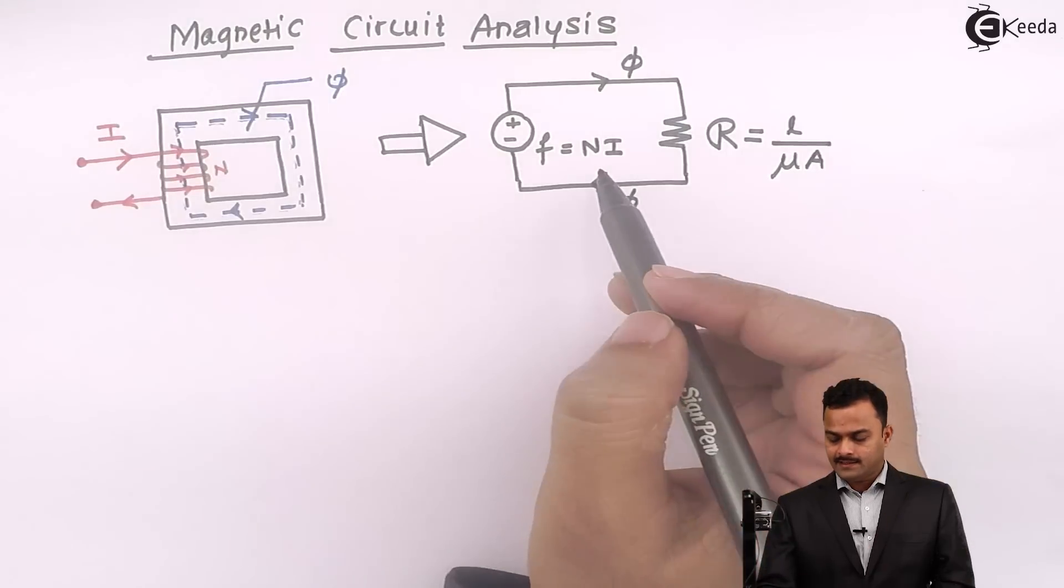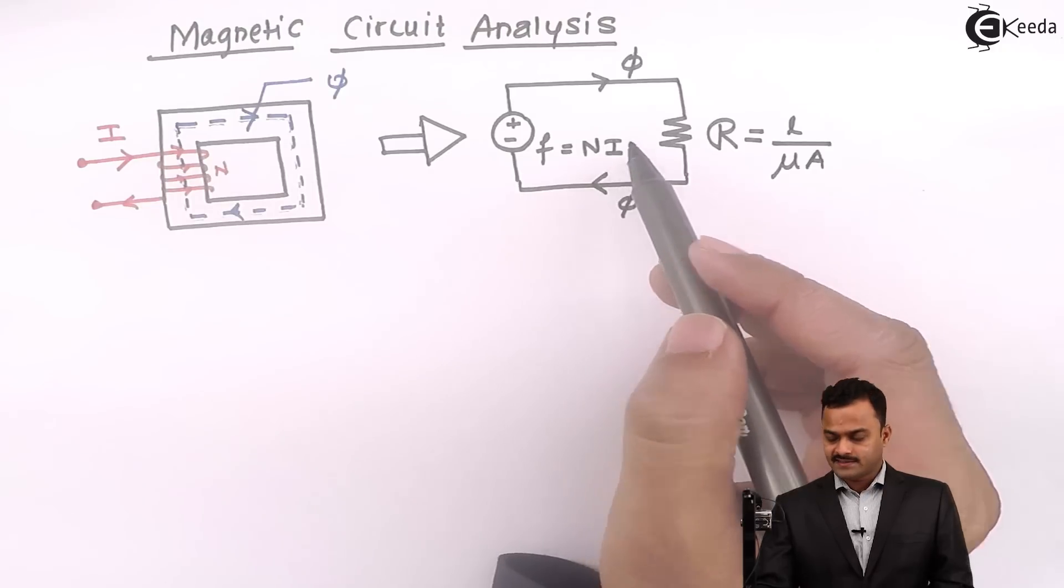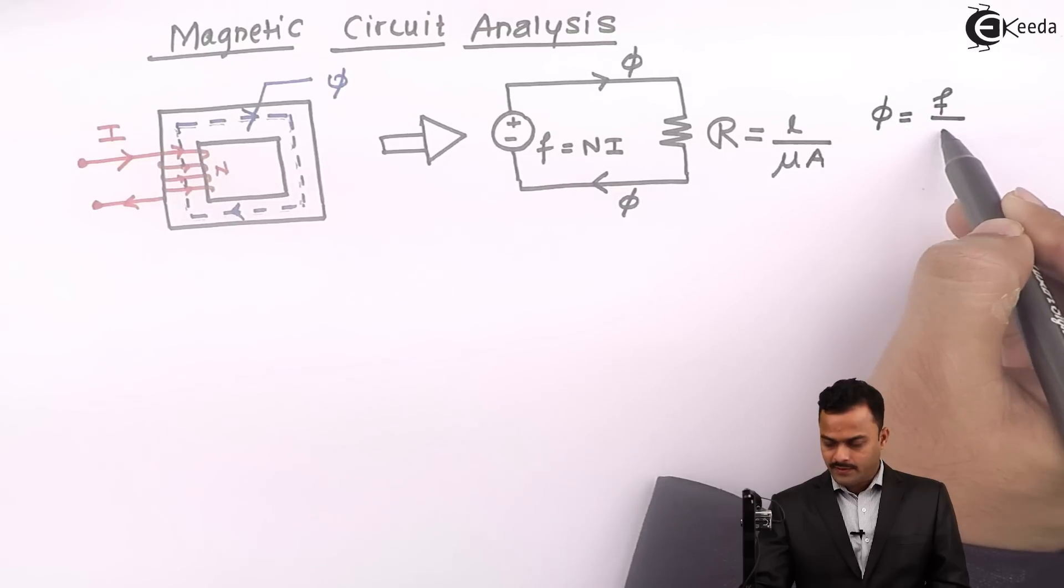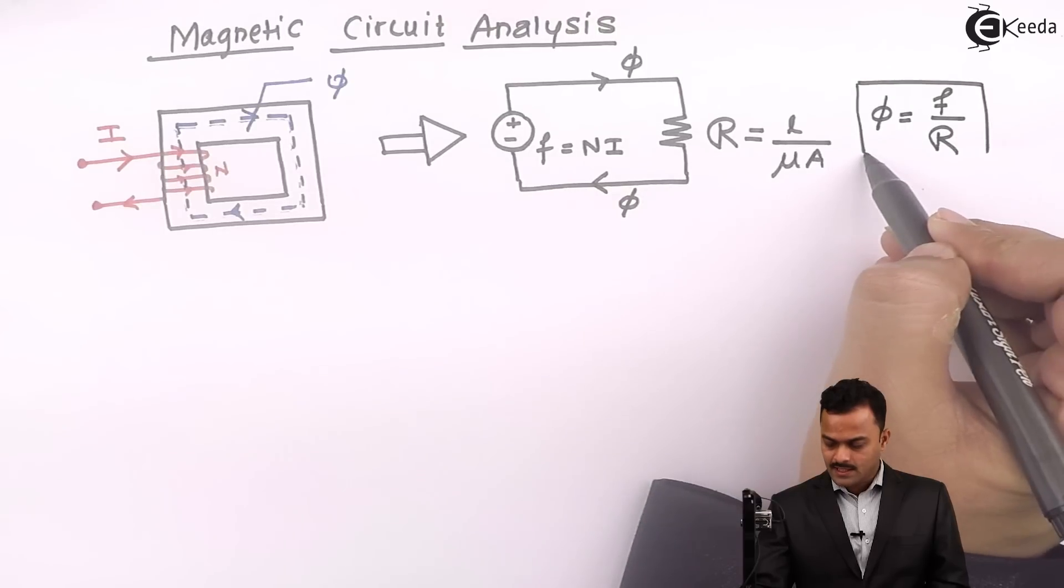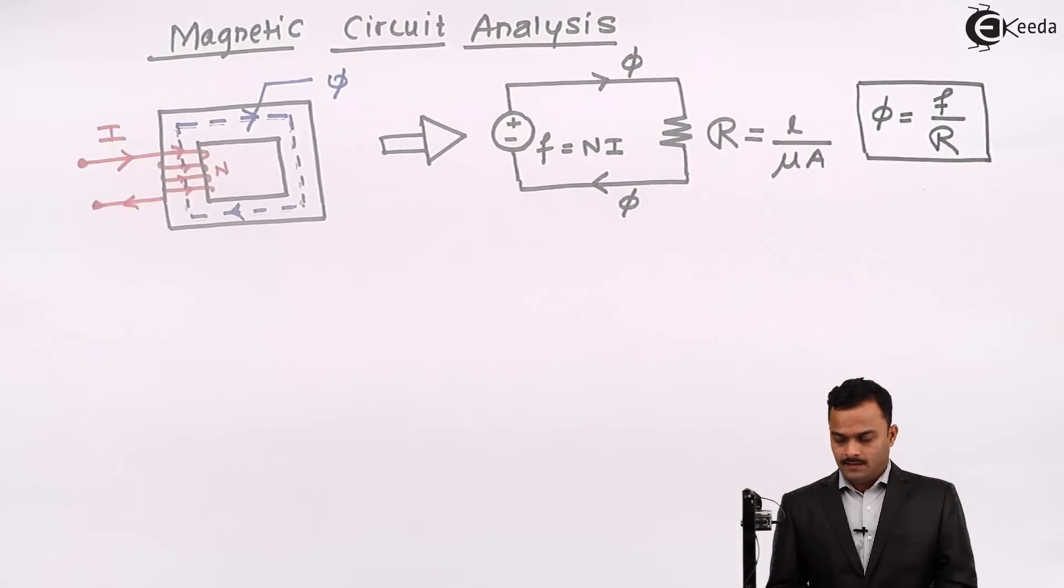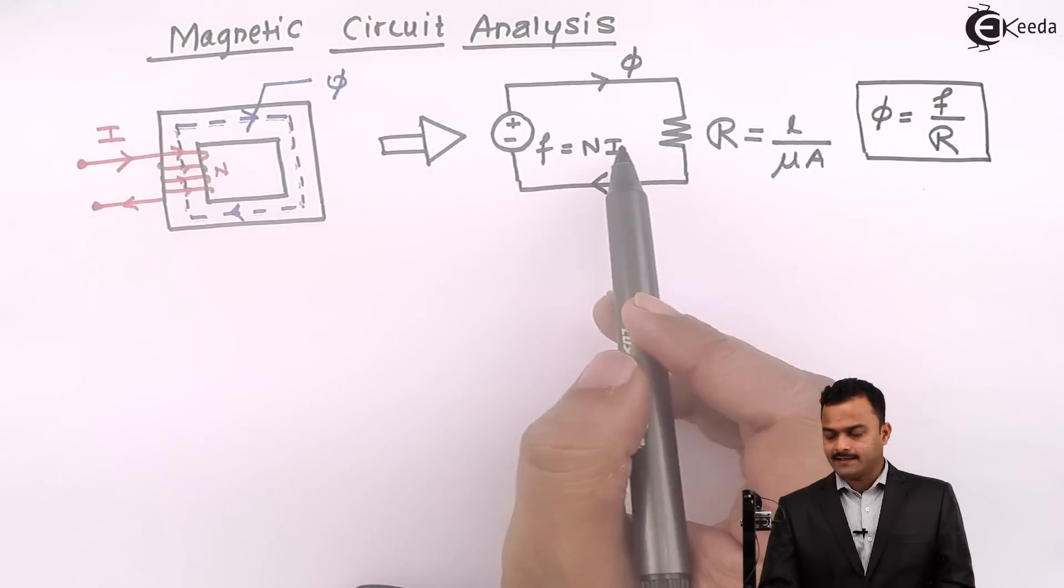Ultimately, I can consider this magnetic circuit as an electric circuit where flux φ is MMF divided by reluctance, very similar to Ohm's law which says I equals E by R. A simple magnetic circuit can be considered like this.